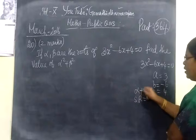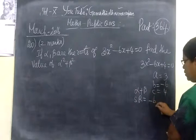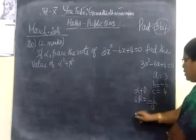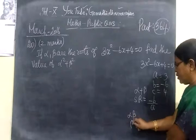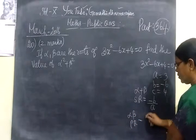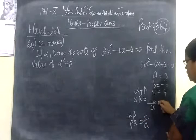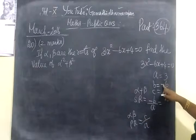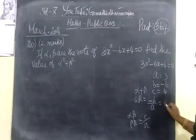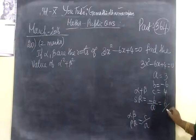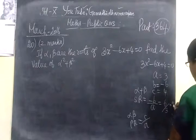That is, you can write alpha plus beta equal to minus B by A. So, minus B value is minus 6, A value is 3. If you cancel, you are getting 2.